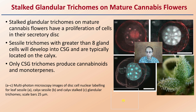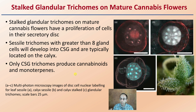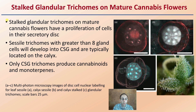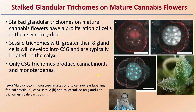More detailed images here give you a really advanced look at some trichomes — looking at flowers with stained different images. These stocked granular trichomes on mature cannabis flowers have a proliferation of cells in their secretory discs, looking at the interior portions. Sessile trichomes with greater than eight gland cells will develop into CSGs, and are typically located on the calyx, which is the structure of the flower. Only CSG trichomes produce cannabinoids and monoterpenes, so it's very important to have as many of those as possible, since they're the only structures responsible for producing cannabinoids.